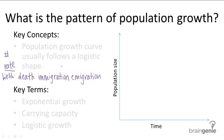So if a population's rate of birth is greater than the rate of death, and the immigration rate is greater than the rate of emigration, the population will grow. And if the reverse is true, the population will shrink. So most populations grow.